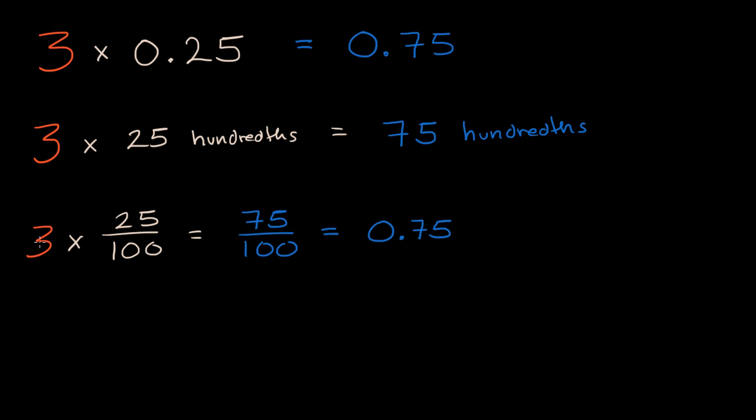If you wanted to more formally view it as fraction multiplication, you could view it as 3 over 1 times 25 over 100. And you multiply the numerators, you get 75. You multiply the denominators, you get 100. Either way, in all of these situations, you're gonna get 75 hundredths.